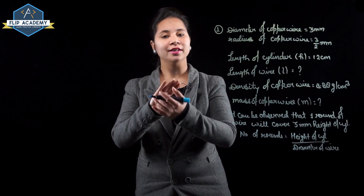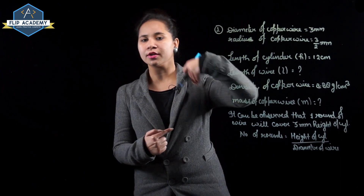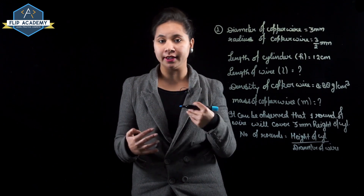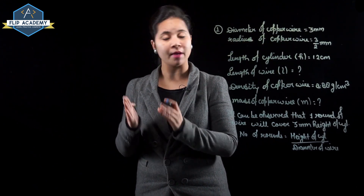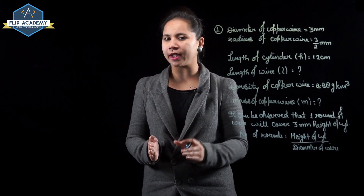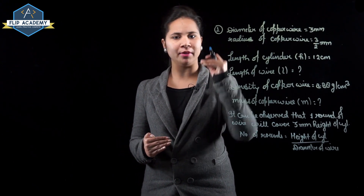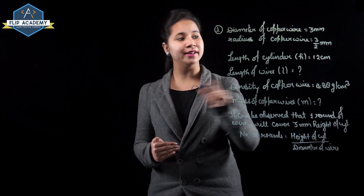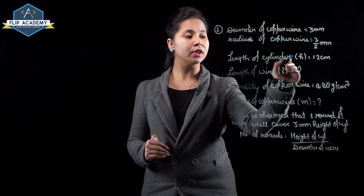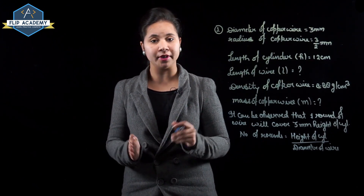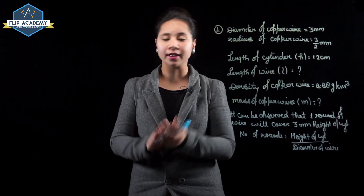In this question, a copper wire is wound around the cylinder. The diameter of the copper wire is 3 mm, so the radius of the copper wire is 3/2 mm. The height of the cylinder is 12 cm.